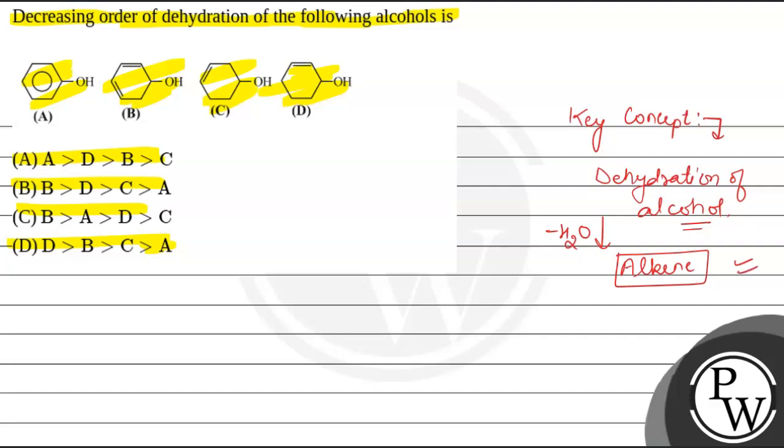Now, because one OH unit is being removed from the alcohol unit and the corresponding alpha hydrogen is being removed from the adjacent carbon, we have been provided with four different options. Starting with the first option, option A, which is given as phenol. When we remove one OH unit from this, the corresponding cation will be formed like this.